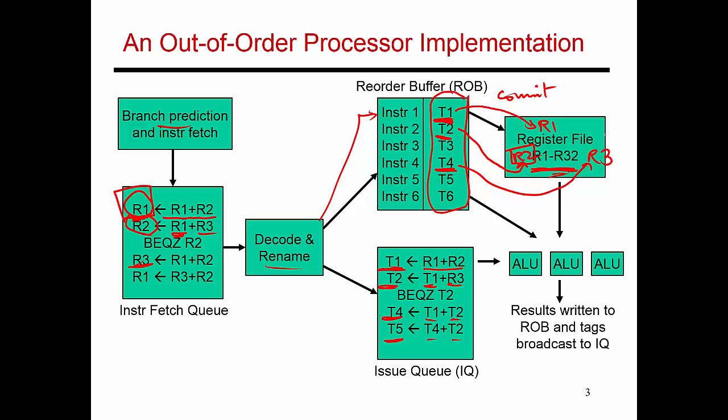So the commit basically happens sequentially. When the oldest instruction completes, it's ready to make its state permanent and it gets copied into the register file. Now the reason that we are doing this in-order commit, like I said earlier, if you let things write their results into the register file out of program order, that leads to chaos. That makes it harder for a programmer to debug and step through the code. And it can also lead to problems in terms of branch mispredicts.